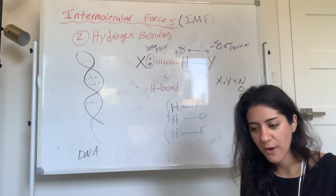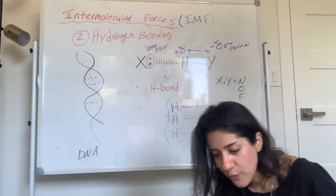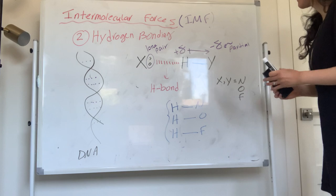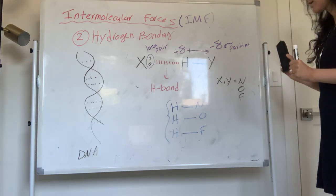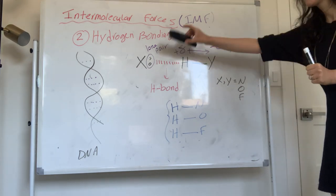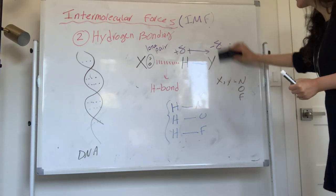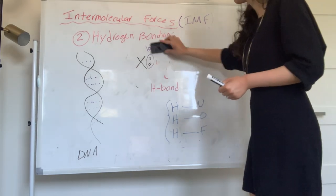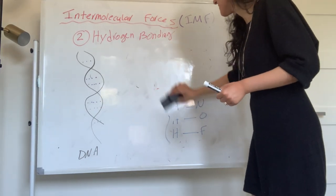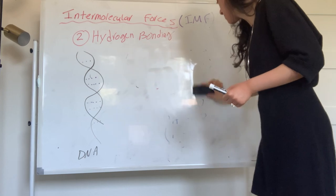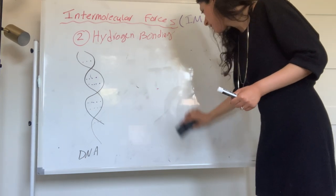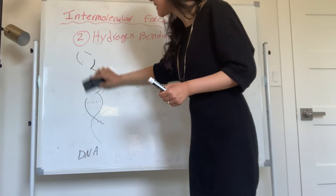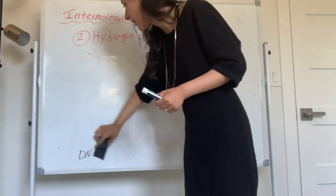You have to have hydrogen directly attached to nitrogen, oxygen, or fluorine to be able to have hydrogen bonding. Hydrogen bonding is responsible for a lot of things — for ice being less dense than liquid water, and for you being unique because that's how DNA is held together.